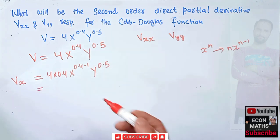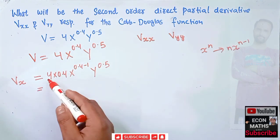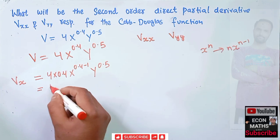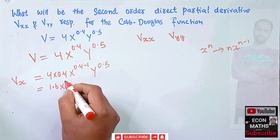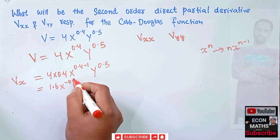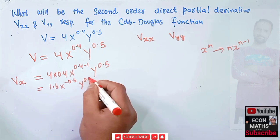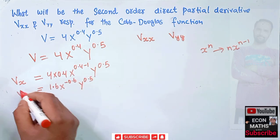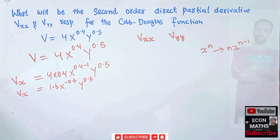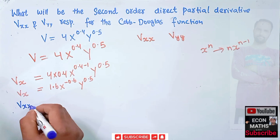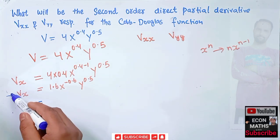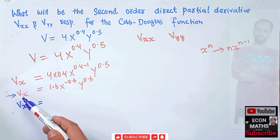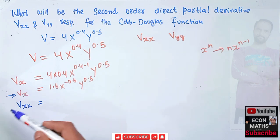This gives us vx = 1.6 * x^(-0.6) * y^0.5. This is our first partial derivative. Now for the second direct partial vxx, we need to differentiate this first partial derivative with respect to x again.